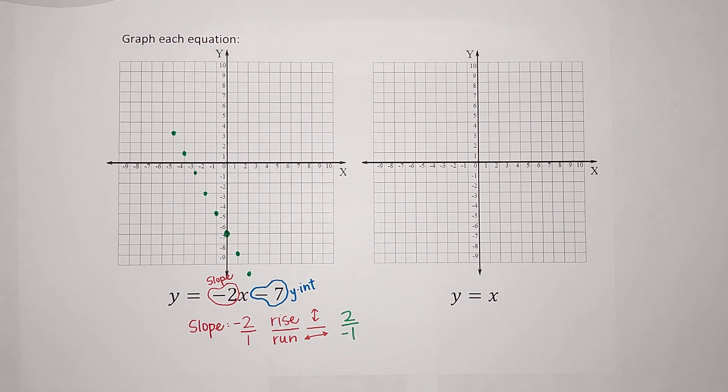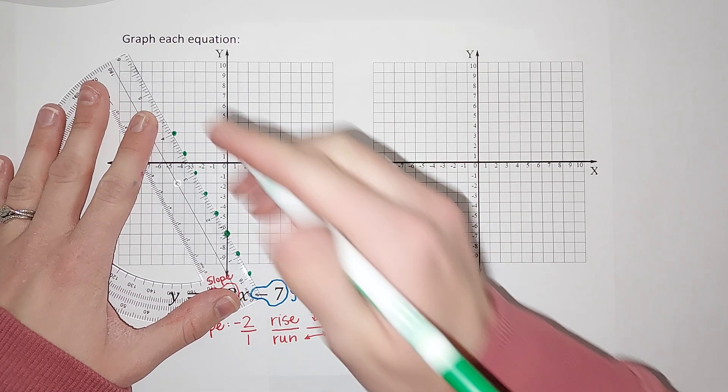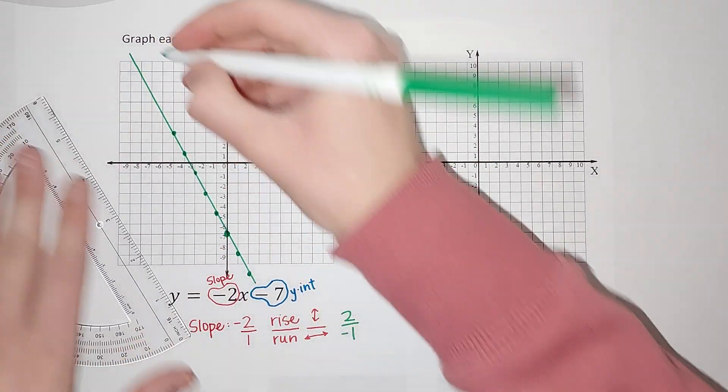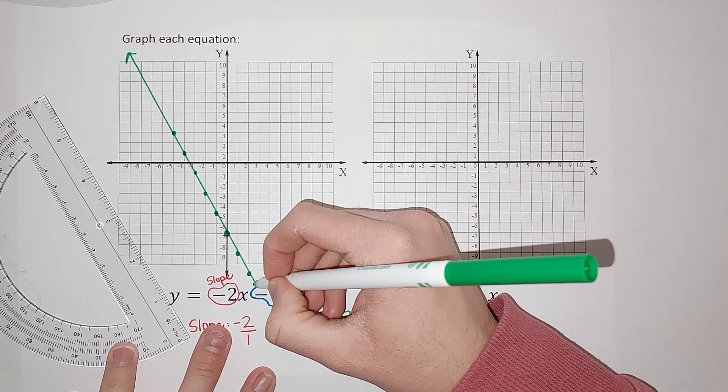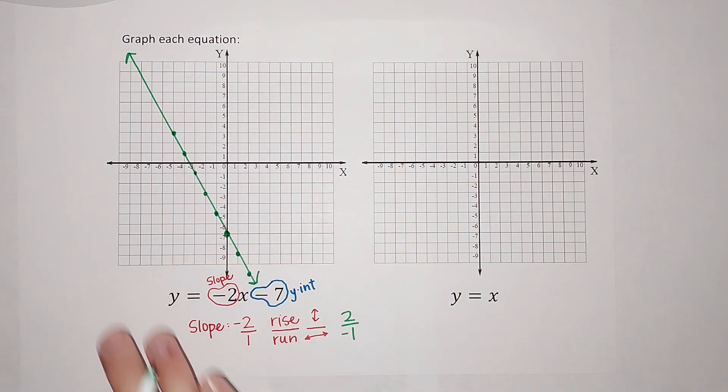Okay, there we go. So there is my line. Well, it's not a line yet. It's just dots. Hold on. Here is my line. And it literally goes on forever. So that means all the ordered pairs along this line are answers for this equation.